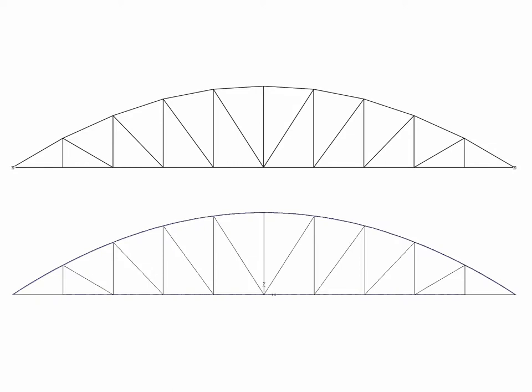The curved compression member in the top image consists of straight segments that change direction abruptly, albeit subtly, at every joint. The curved compression member in the bottom image consists of continuously curved segments where there is no change in direction at the joints other than the curvature that is occurring everywhere else along the member.